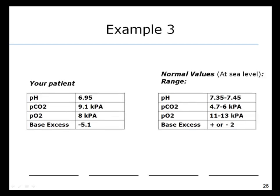In example three, your patient's pH is 6.95, which is quite low. The PCO2 is 9.1 kilopascals, which is quite high. The PO2 is 8 kilopascals, which is quite low. And the base excess is minus 5.1, which is quite negative, well outside the main range.